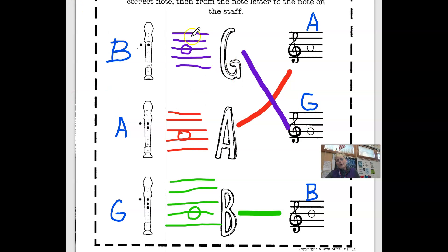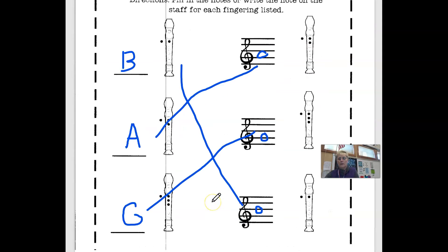Okay, and on your assignment you're supposed to name them. So this is a B, and you put the line to the letter B. This is an A, and this is a G. So remember those fingerings, and then when you do this assignment, you just match them.